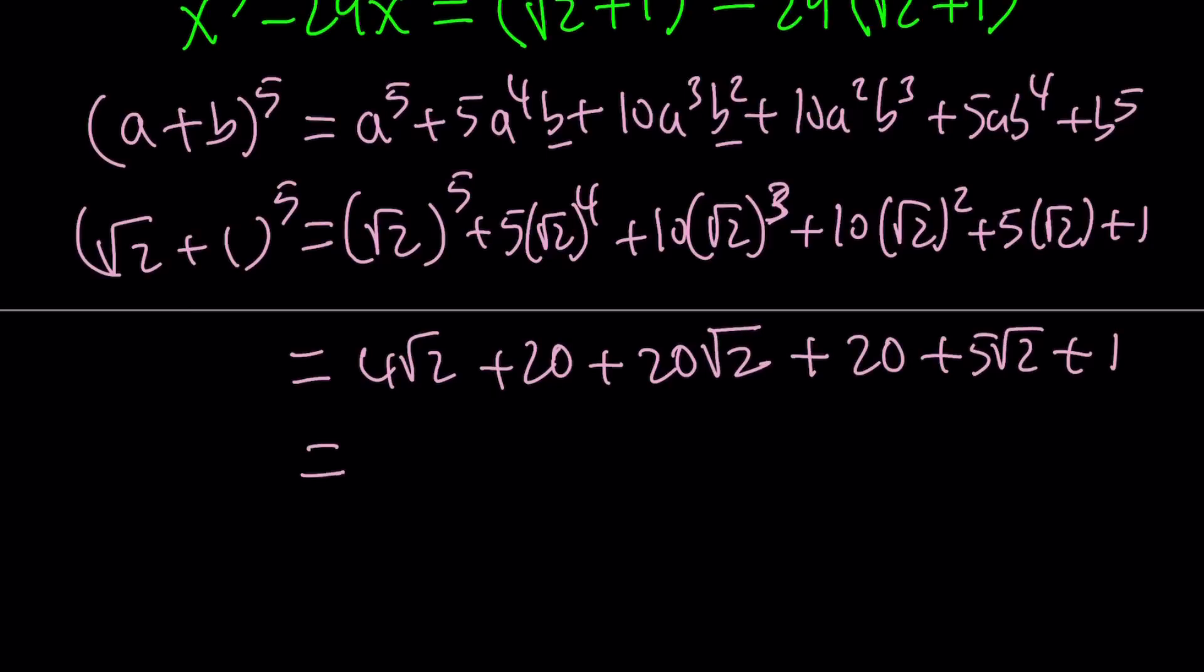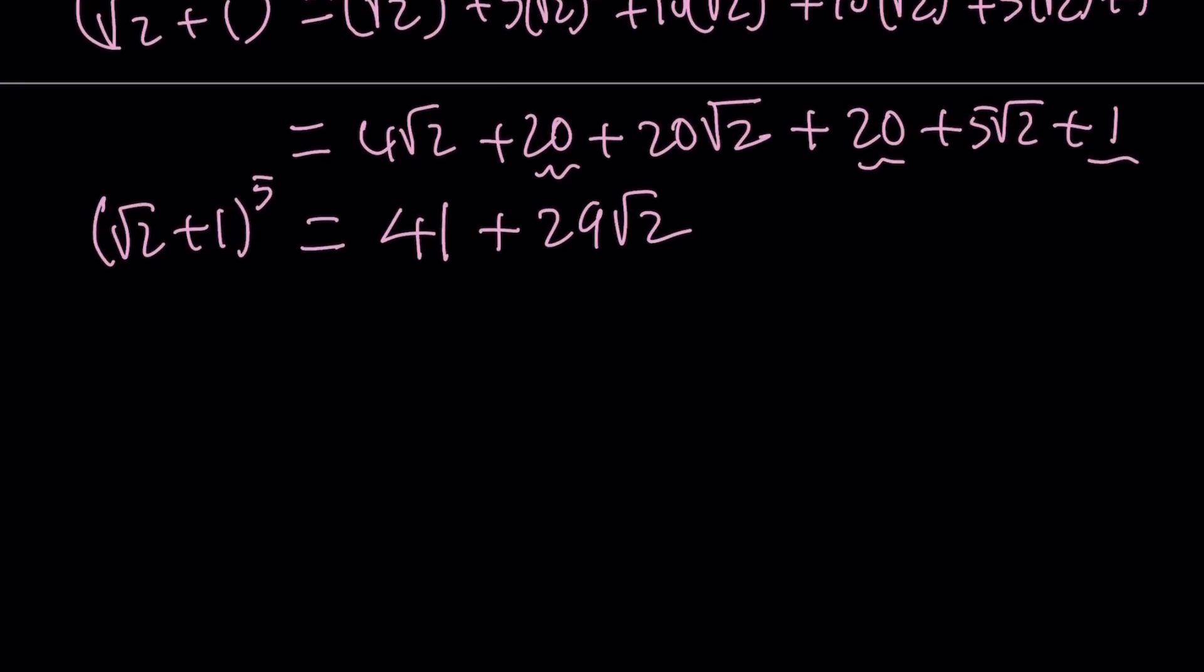Now let's go ahead and simplify this by adding the radicals together and the integers together. So I have 20 + 20 + 1, that is 41, and then 20 + 5 is 25, plus 4 is 29, and multiply by root 2.